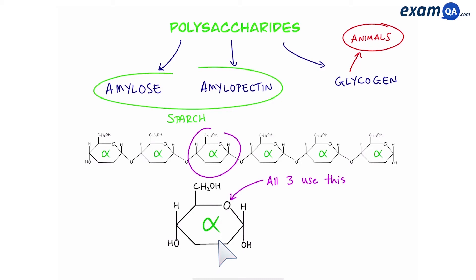So how is it that alpha glucose can form different types of polysaccharides? To do that let's first of all look at the structure of each of these individually.